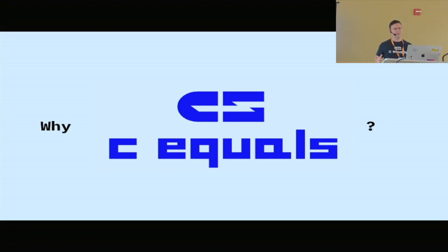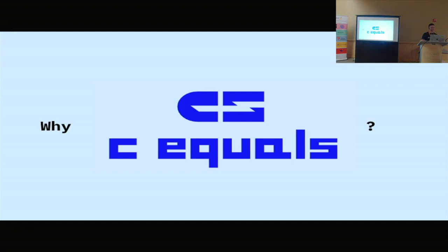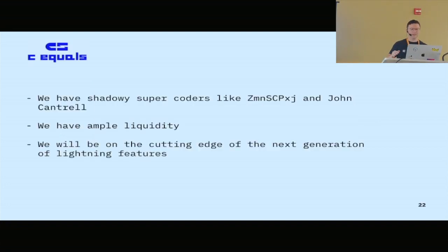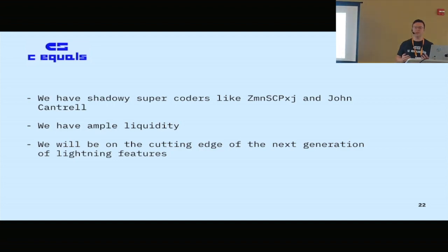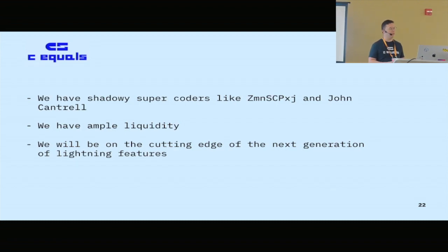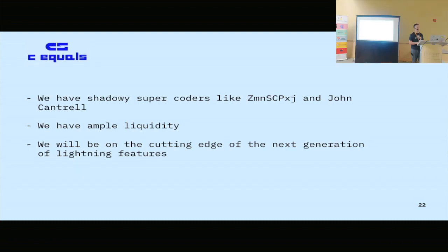Why C=? C= was founded in June of last year. We are part of Block, which is really cool. Here are three reasons why you should pick C=. First, we have shadowy super coders like Z-Man and John Cantrell. Second, we have ample liquidity. And the third reason is we'll be on the cutting edge of the next generation of Lightning features.